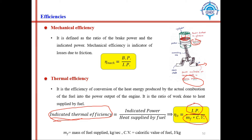Heat supplied equals Mf × CV. Every fuel has its own calorific value in Joules per kg — it represents how much heat is generated by burning 1 kg of fuel. Multiplying by mass gives units of Joules, and since Mf is in kg/s, the result is Joules per second, which is Watts — the same unit as indicated power, so the ratio is dimensionless.